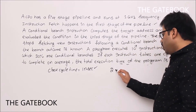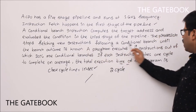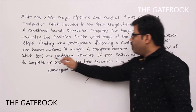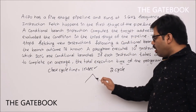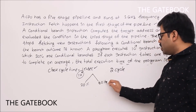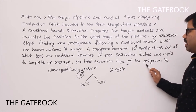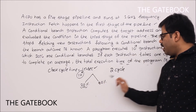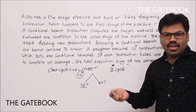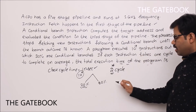Now back to the problem: the processor stops fetching after a conditional branch until the outcome is known. The program executes 10^9 instructions, out of which 20% are conditional branches and 80% are normal instructions. Each instruction takes one cycle to complete on average, and conditional branches incur a two-cycle penalty.